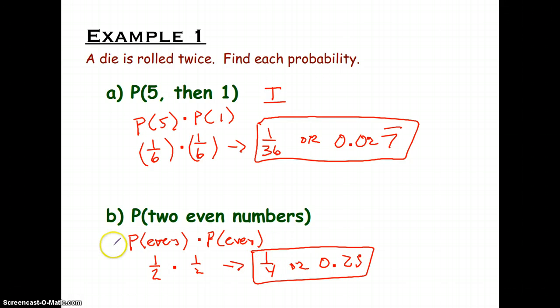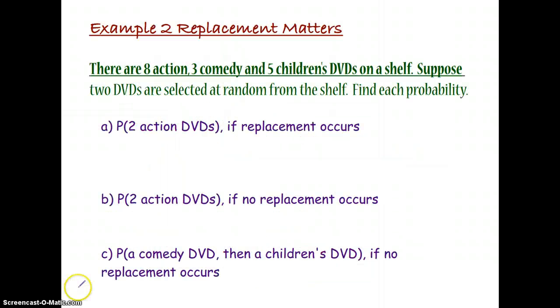Again, we're finding the probability of one event and then the probability of a second event, and we're multiplying these together. Both of these are independent events.